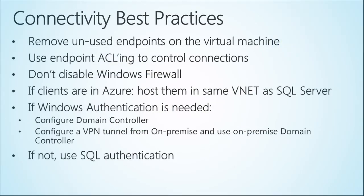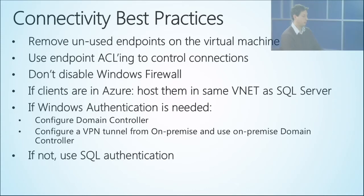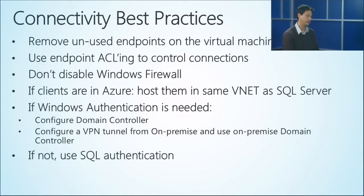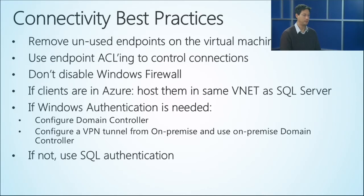For connectivity best practices: if you don't use some endpoints, remove them — just general security best practice. There is a capability called endpoint ACLing where you specify which IP addresses or subnets can connect to specific endpoints. Don't disable Windows Firewall — you can always open the specific ports you need. If your clients are in Windows Azure, host them in the same virtual network as SQL Server to ensure IP addresses never change and connections always work. For Windows Authentication, either configure a domain controller in Windows Azure or use a site-to-side tunnel with your on-premise domain controller.